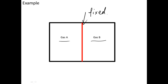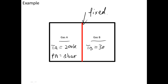The properties of state of gas A are also given. At the initial state, T_A equals 200 Kelvin and P_A equals 1 bar. And T_B equals 300 Kelvin and P_B equals 2 bar. Now the partition is removed and both gases are allowed to mix with each other.